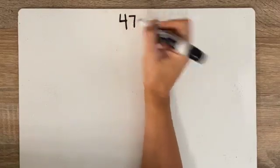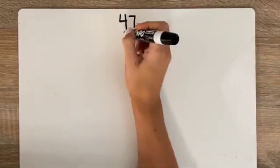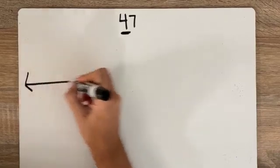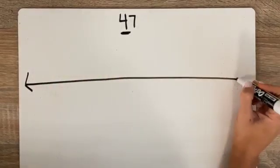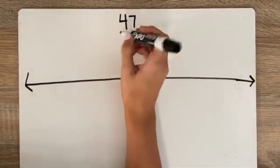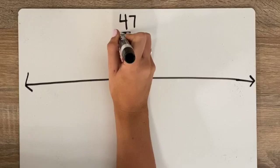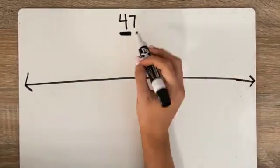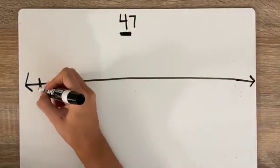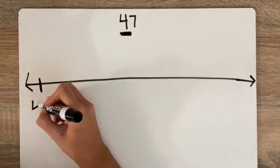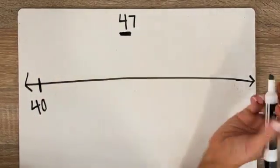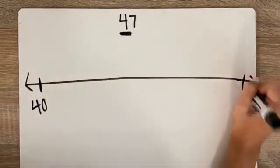47 rounded to the nearest 10. My first step is to figure out what two numbers 47 is in between. Since I'm rounding to the nearest 10, I know that I will have a 40 here and I will have a 50.